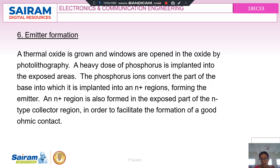With the base and collector regions already formed, the next step is emitter formation. A thermal oxide is grown and windows are opened again by photolithography. A heavy dose of phosphorus is implanted into the exposed layer, resulting in an N-type region. This converts part of the base into which it is implanted into an N+ region, forming the emitter. An N+ region is also formed in the exposed part of the N-type collector region to facilitate good contact. The N+ region is a heavily doped emitter that acts as a source of charge carriers.